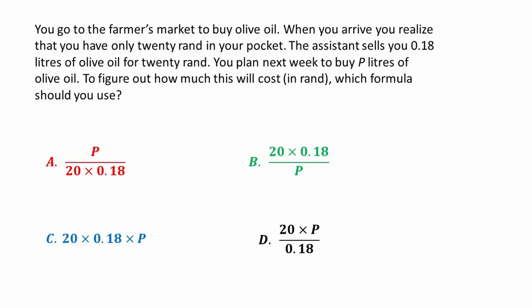Let's start with an everyday example. You go to the farmers market to buy olive oil. When you arrive you realize you only have 20 rand in your pocket. The assistant sells you 0.18 liters of olive oil for 20 rand. You plan next week to buy p liters of olive oil. To figure out how much this will cost in rand, which formula should you use? Pause the video now.